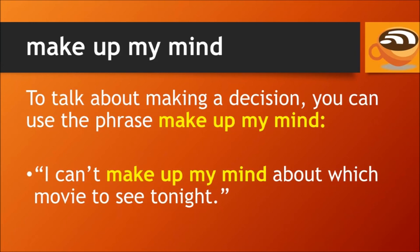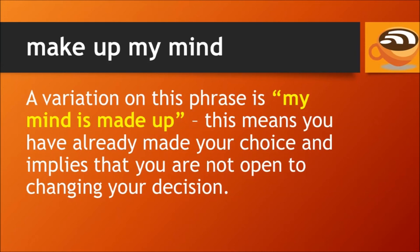To talk about making a decision, you can use the phrase make up my mind. For example, I can't make up my mind about which movie to see tonight. This means I can't decide or I can't choose. A variation on this phrase is my mind is made up, which means you have already made your choice and implies that you are not open to changing your decision.